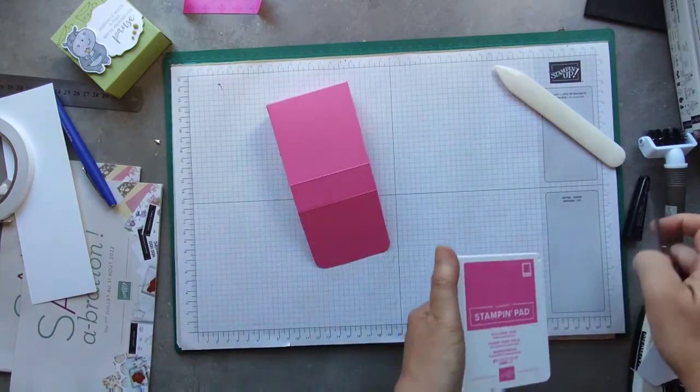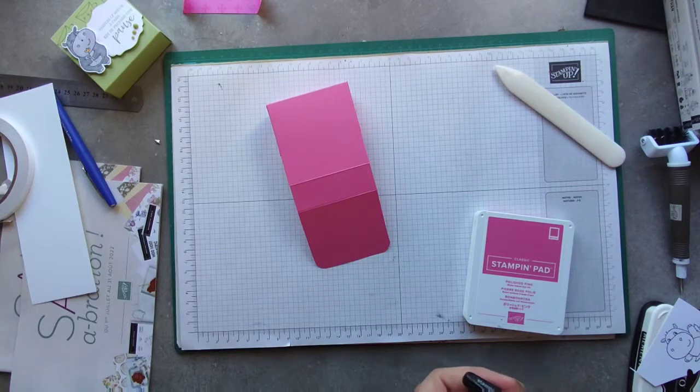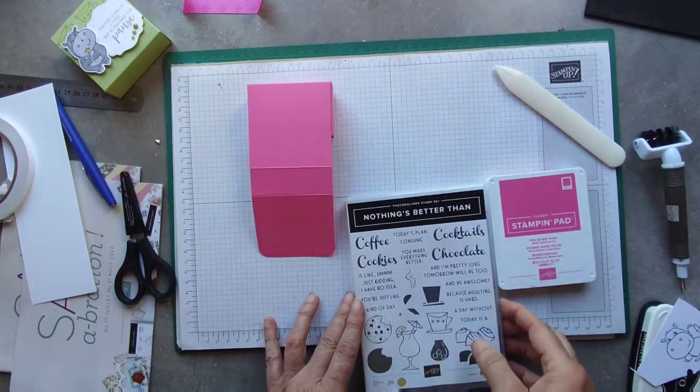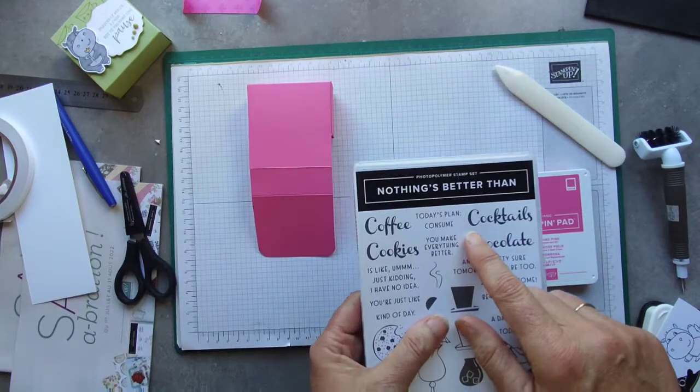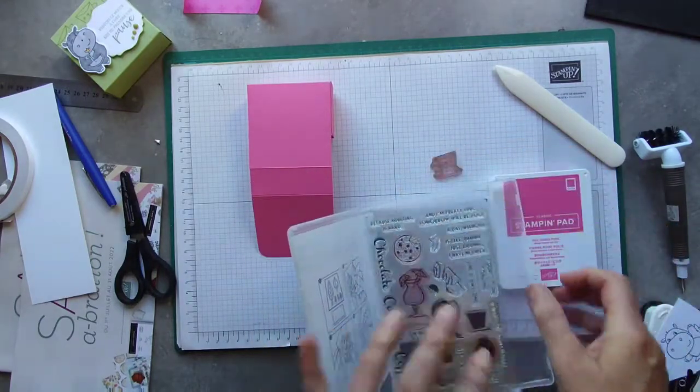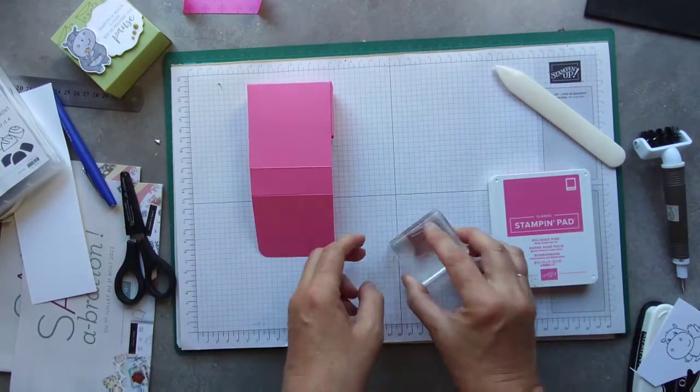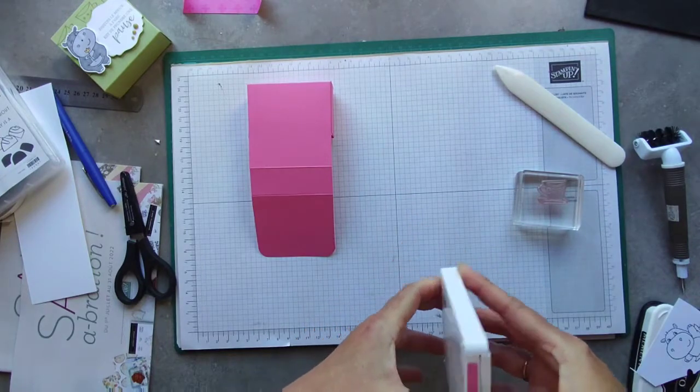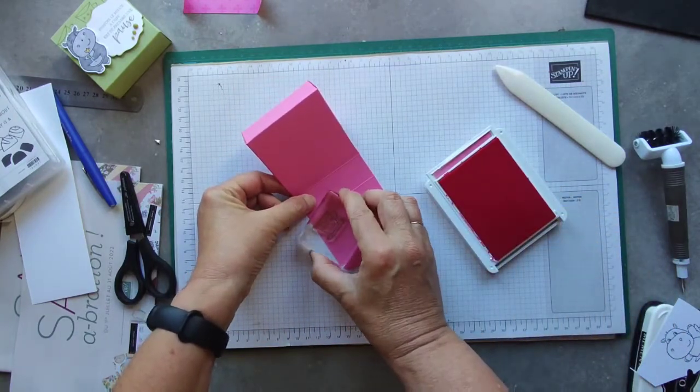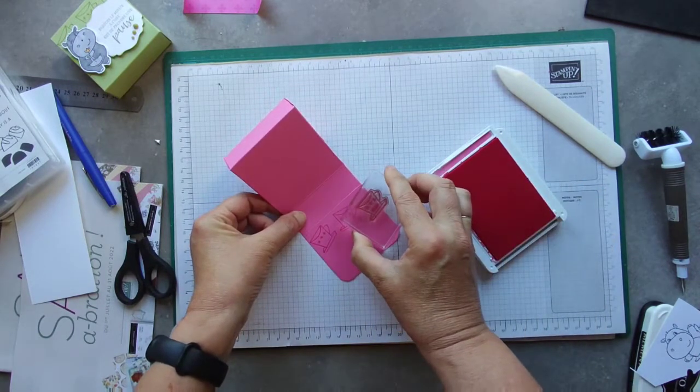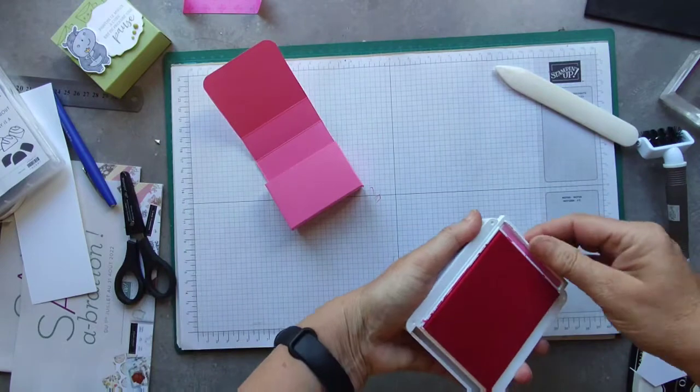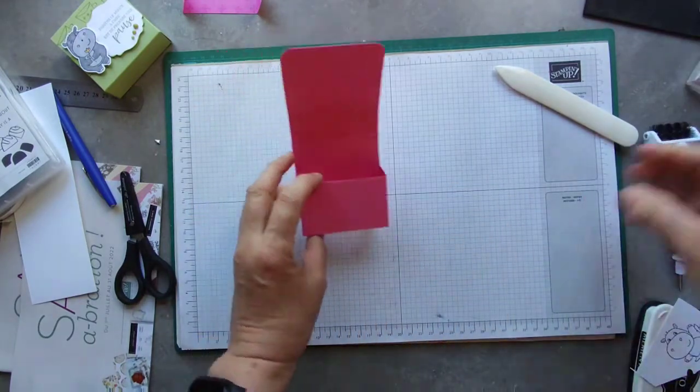What I'm going to do now, possibly I should have done this before I put the box together. I'm going to take the Nothing's Better stamp set, and take the little cup and saucer, and I'm going to just put three stamps on the front like so.